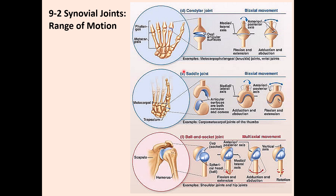Saddle joints are not common — each surface is concave in one direction and convex in another, allowing abduction, adduction, flexion, and extension. The joint is deeper than condylar joints. The only example is the carpometacarpal joint of the thumb. Multiaxial joints are the most mobile, with one spherical surface and a deeper depression on the other. These include the shoulder (most mobile) and hip joints, which are at higher risk of dislocation.